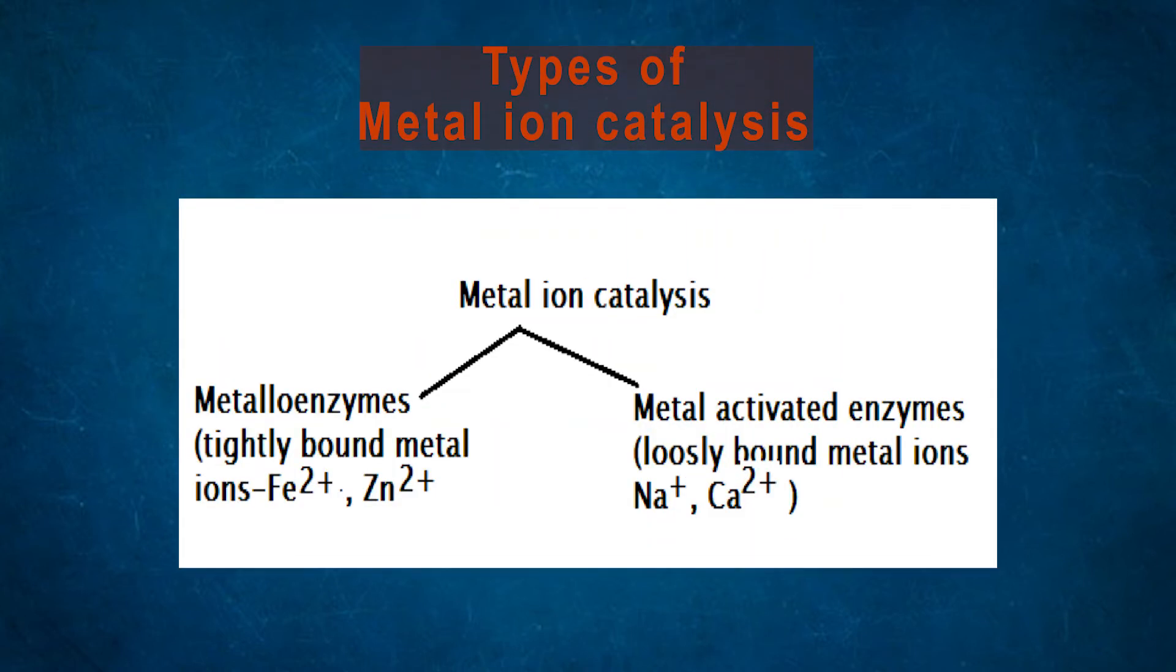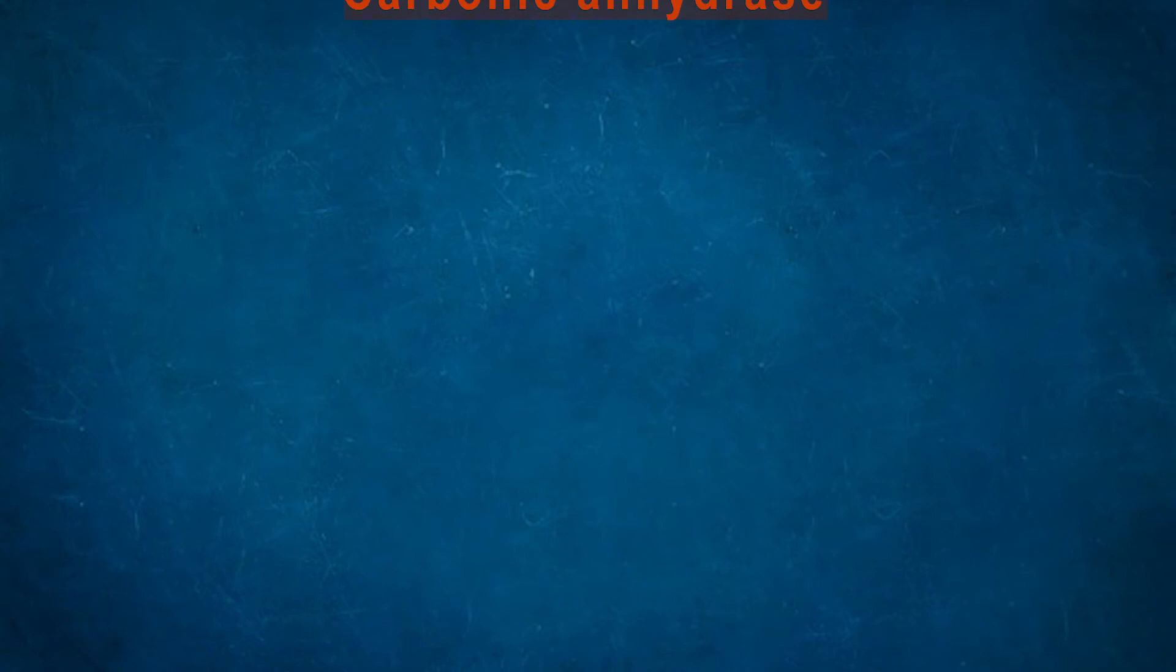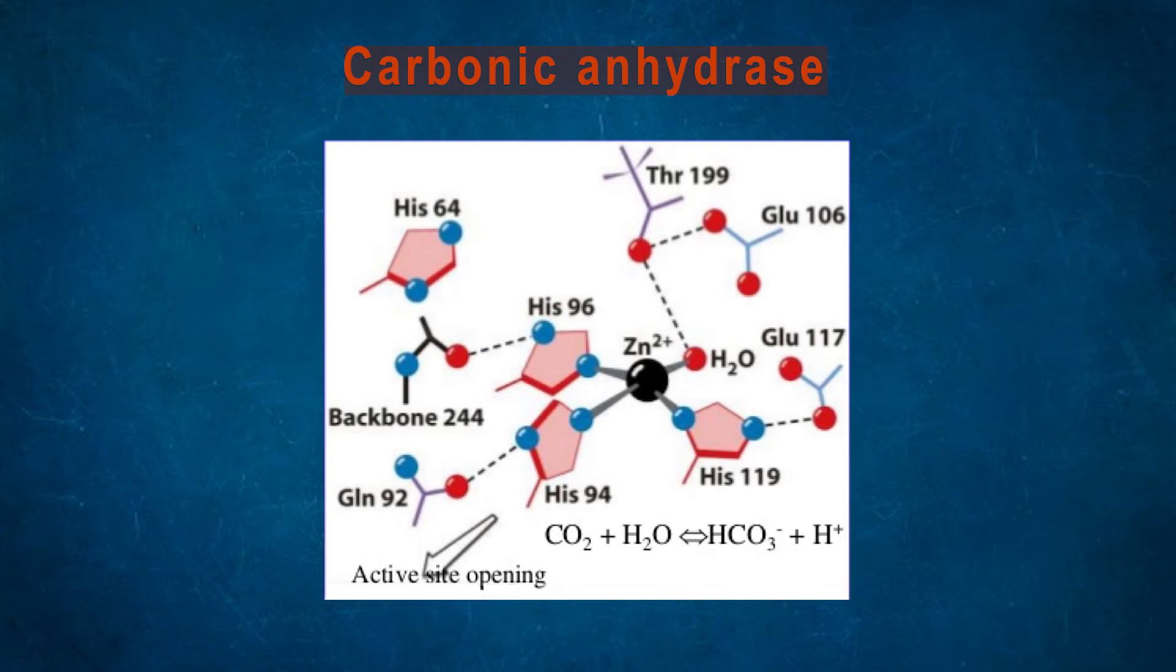Metal-ion catalysis has two types: metalloenzymes where the metals are tightly bound, like iron Fe2+ and Zn2+, and metal-activated enzymes where metals are loosely bound like sodium and calcium. In carbonic anhydrase, metal-ion catalysis participates in the catalytic process by binding to substrate to properly orient them for reactions, mediating redox reactions via reversible metal-ion oxidation state changes, and electrostatic stabilization of negative charges by shielding.